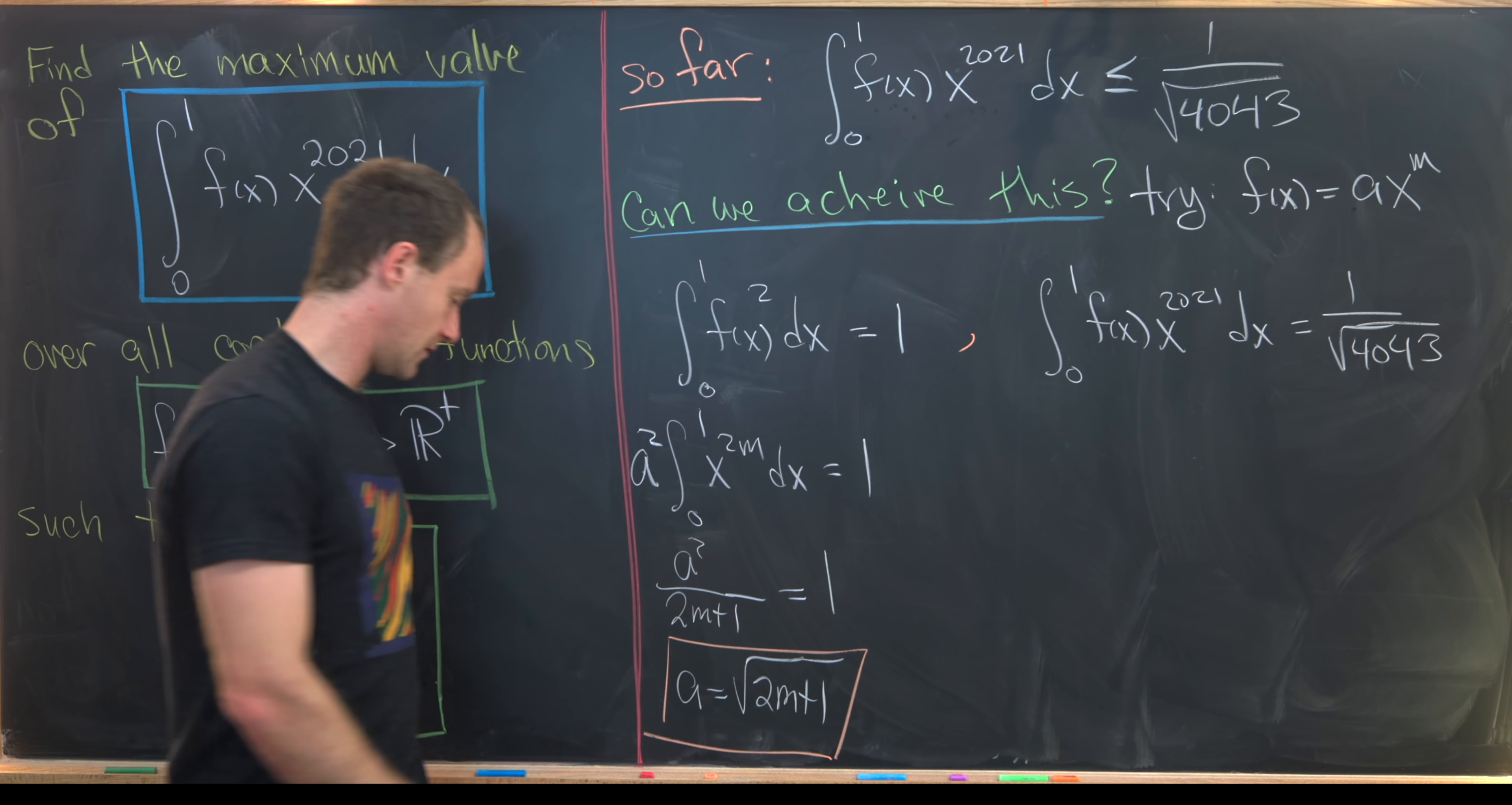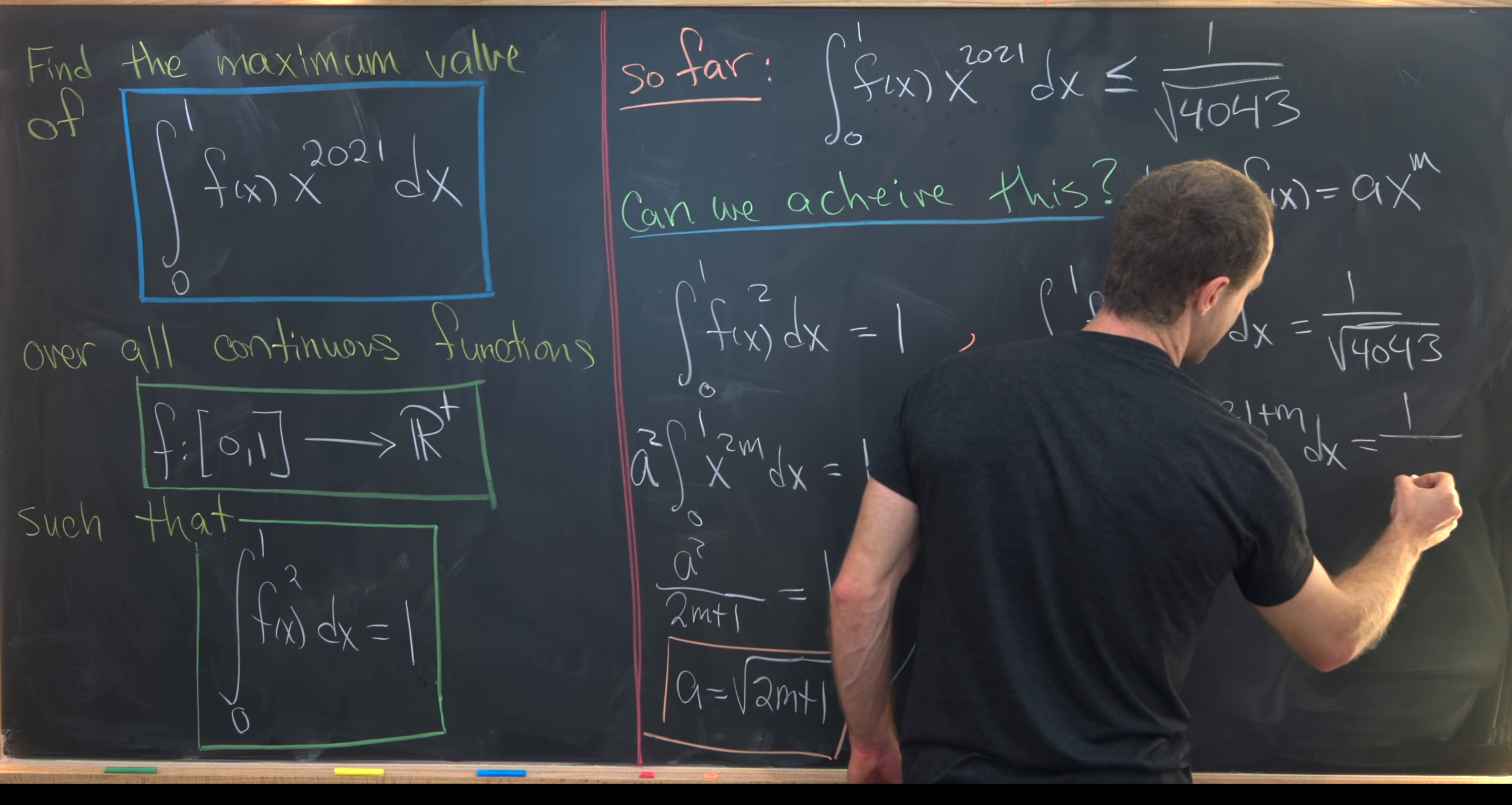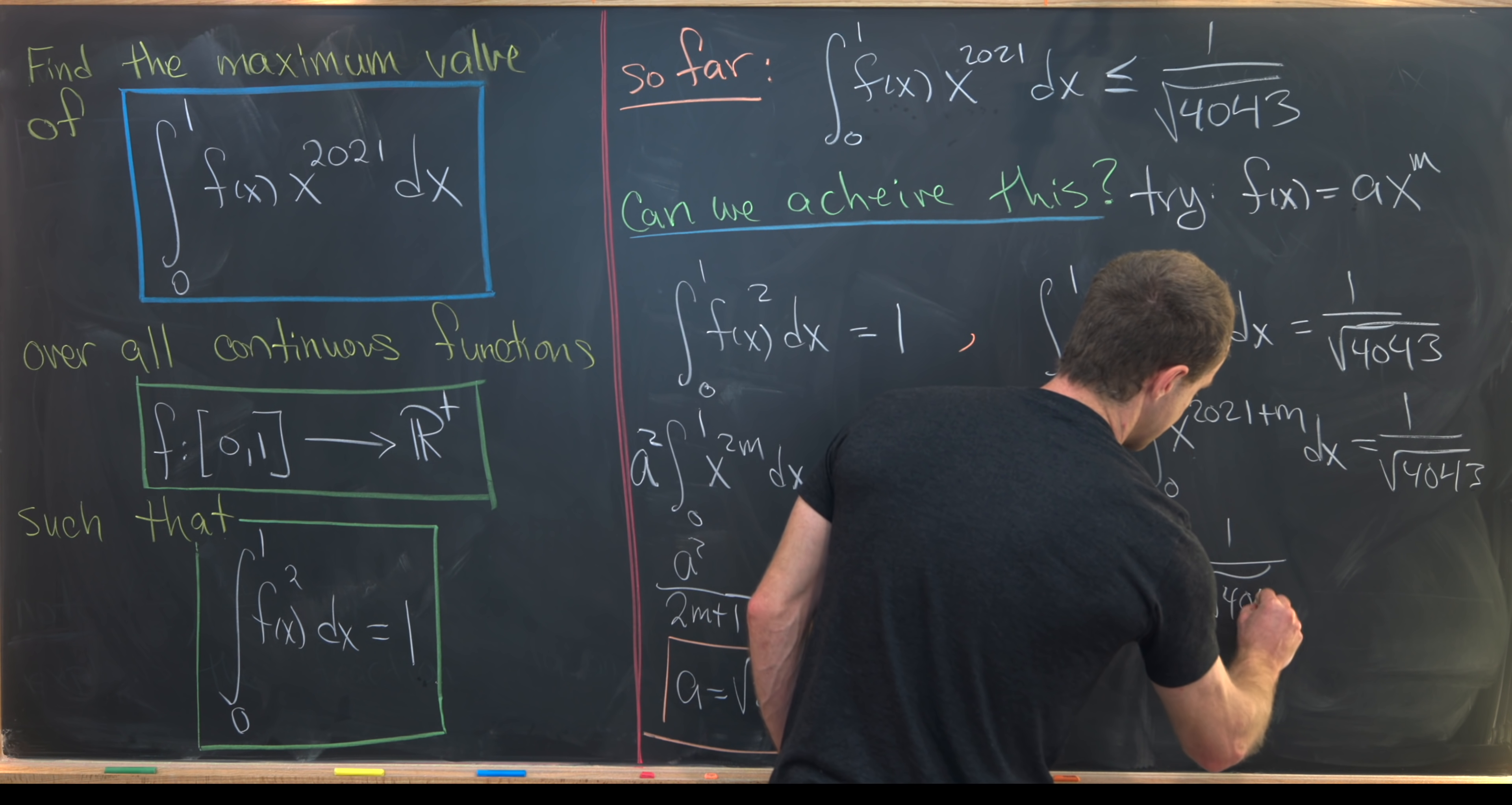We have a value for a now. Now let's go ahead and take this value for a and insert it over here when we rewrite this equation. Notice f(x) is a times x to the m. Like I said, we know what a is in terms of m. We can factor that out. We have the square root of 2m plus 1 times the integral from 0 to 1 of x to the 2021 plus m dx equals 1 over the square root of 4043. But now we can integrate this with the power rule again. Add 1 to the exponent, divide by the new exponent, evaluate it at 1, and we'll get 2022 plus m. So that gives us a new equation, which is the square root of 2m plus 1 over m plus 2022 equals 1 over the square root of 4043.